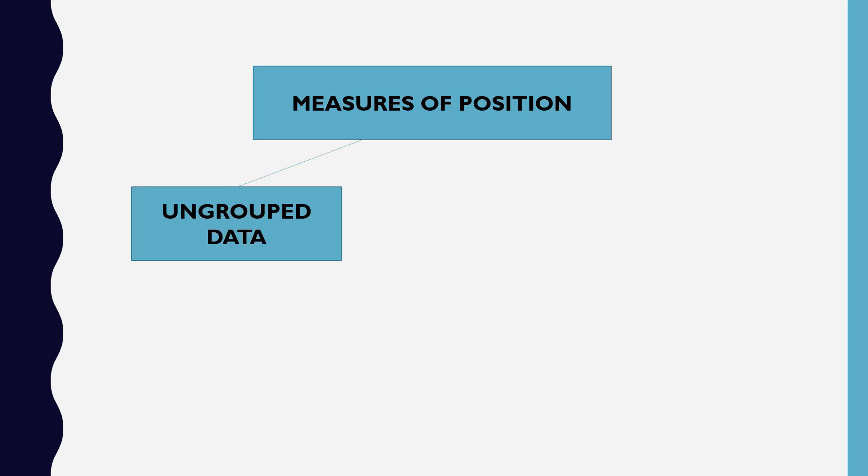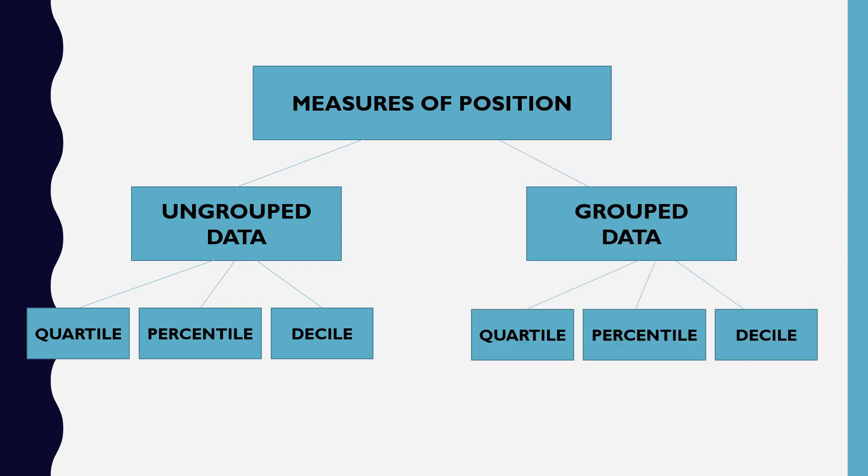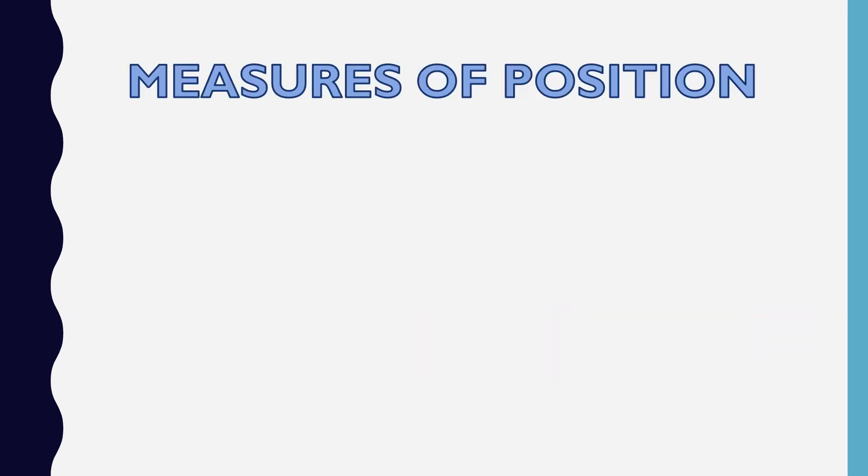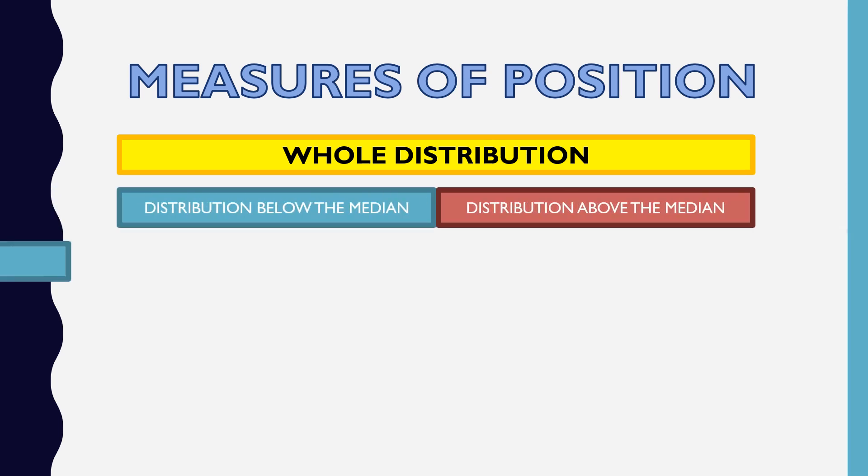For the measures of position, i-discuss natin yung ungroup data ng quartile, percentile, and deciles. For ungroup data, ito yung hindi natin ginagamitan ng frequency distribution table. Ginagamit lang natin ito yung mga list lang ng numbers, hindi naka-table. While for group data, ito yung mga data sa sobrang dami na, let's say 30 and above, gumagamit tayo ng frequency distribution table. This is just an introduction on the topic quartiles, deciles, and percentiles. We will have a detailed discussion sa mga susunod nating video tutorials.